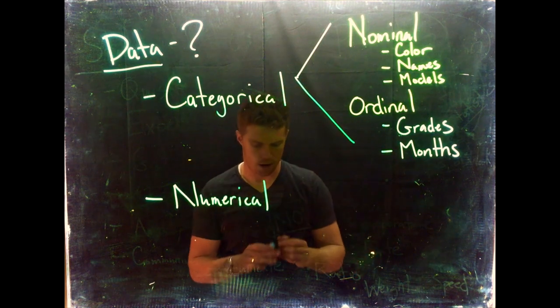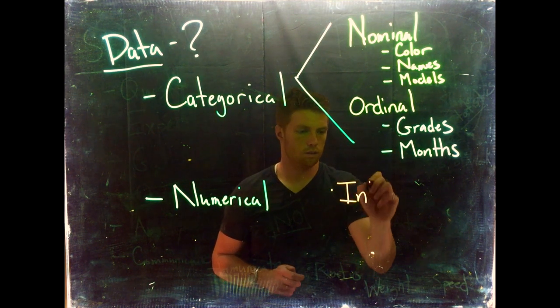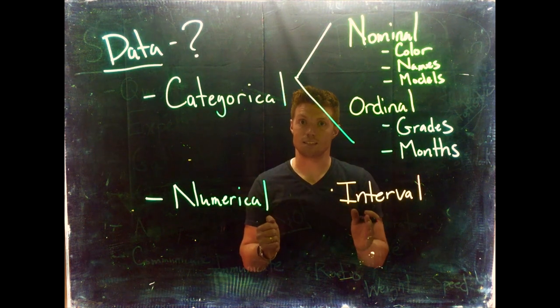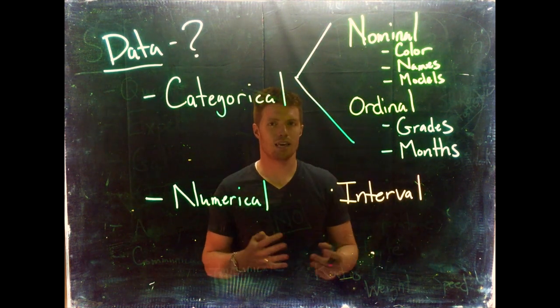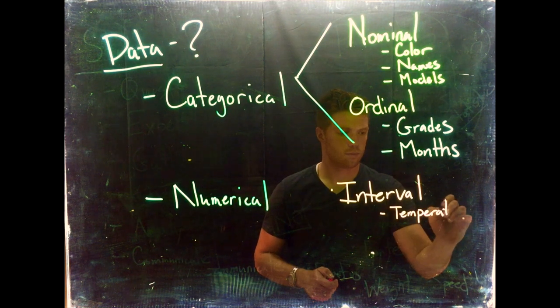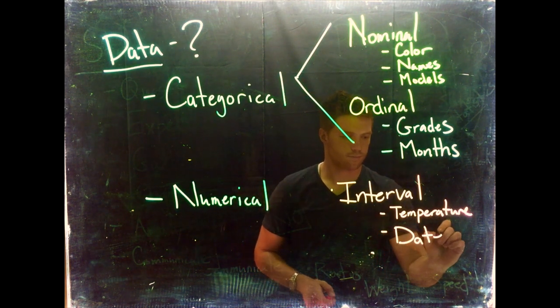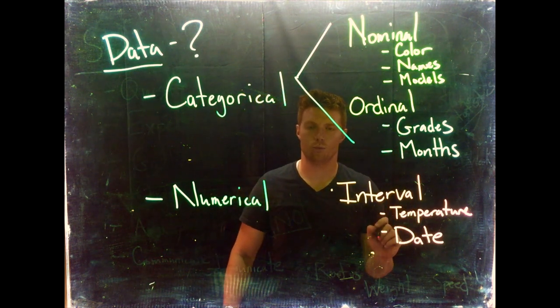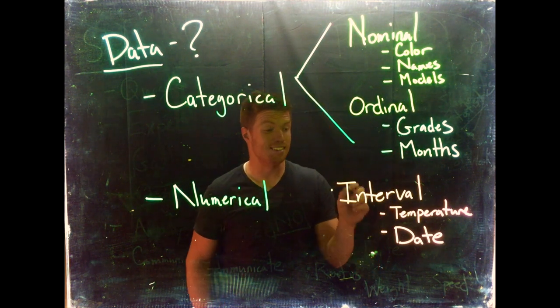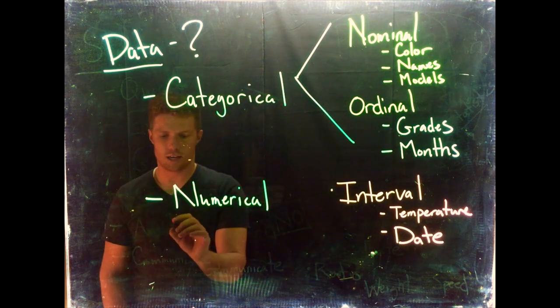Now let's look at numerical. We've got a couple options here as well. We have interval data - data where we have a specific distance between two points but there's not really a set zero point. One example could be temperature, and another one we could use is date. These don't have a fixed zero point, and we can see some of this by trying to do division. If division doesn't make sense here, then it's probably a good indication that we have interval data.